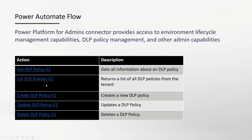You can see here — for example, the Get DLP Policy action allows you to get information about an existing DLP policy, including details about connectors in different categories like blocked, business, and non-business. Then we have the List DLP Policies V2 action, which lists all policies in the tenant. And then create, update, and delete actions allow you to create, update, and delete DLP policies.